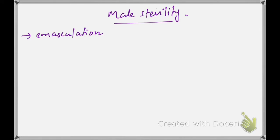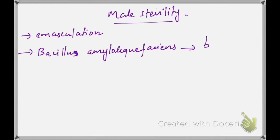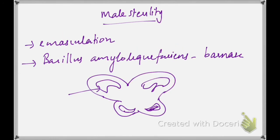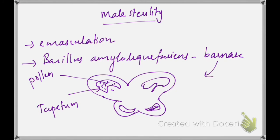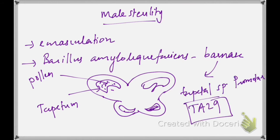Male sterile plants are created by introducing a bacterial gene from Bacillus amyloliquefaciens, which codes for an enzyme called barnase. The tissues known as tapetum are responsible for producing pollen. If we introduce the barnase gene along with a tapetum-specific promoter ta29, the tapetal cells will be destroyed or will not mature, and thus we can stop the production of pollen.